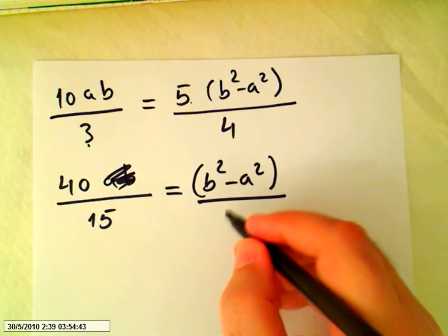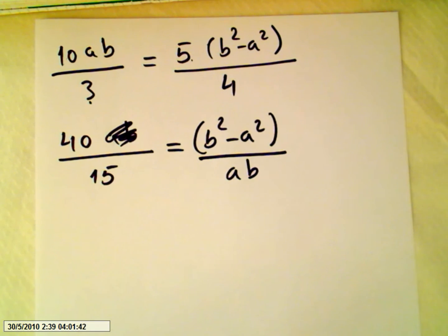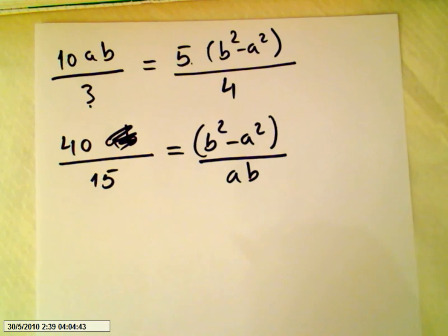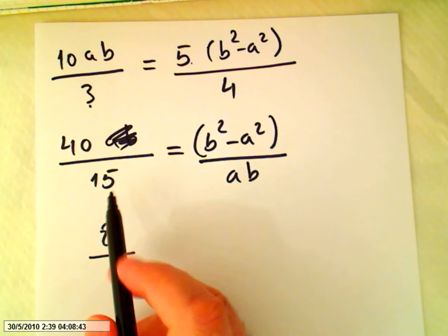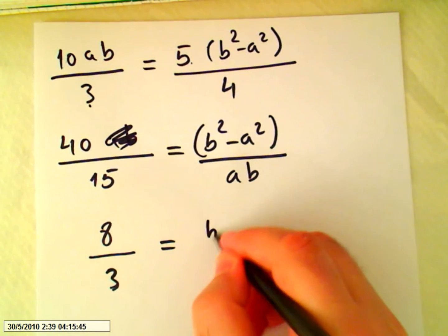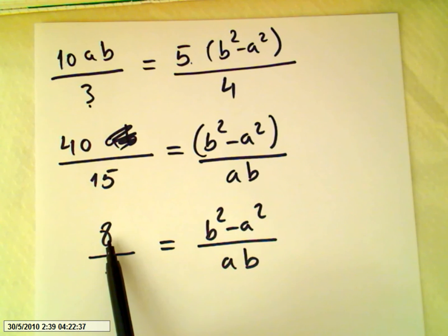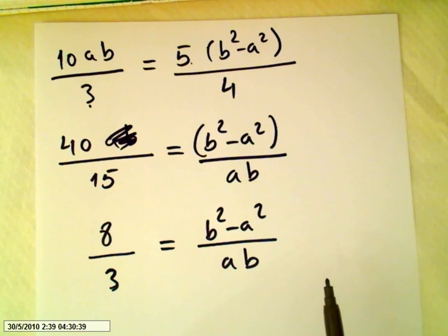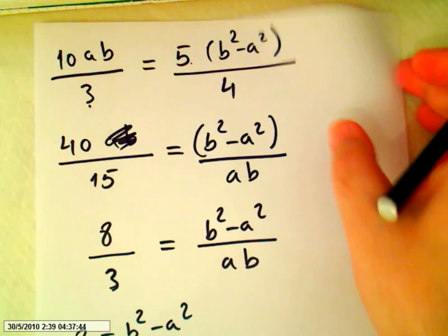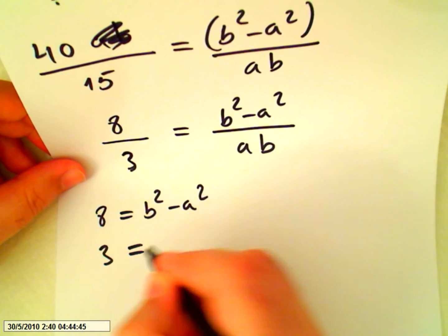And we get 15 equals b squared minus a squared, and ab can come down to the denominator. Okay, 40 over 15, if we divide 40 by 5 we will get 8, if we divide 15 by 5 we will get 3. So if this numerator equals this one and this denominator equals this one, what we have is a system here where 8 equals b squared minus a squared, and 3 equals ab.